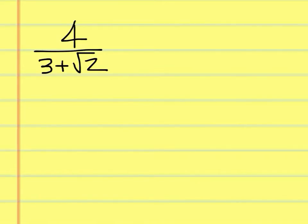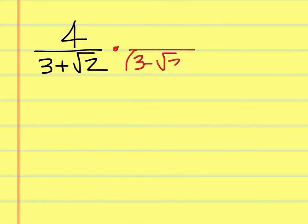That's what you're doing here. You're going to multiply 3 plus square root of 2 by 3 minus square root of 2. And what you do on the bottom, you do to the top.